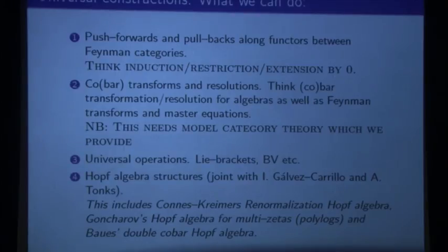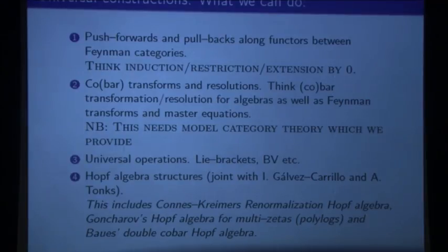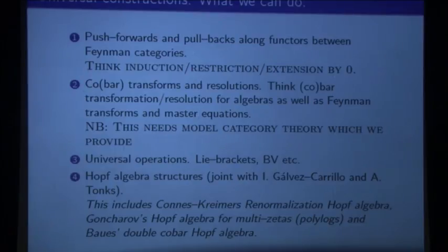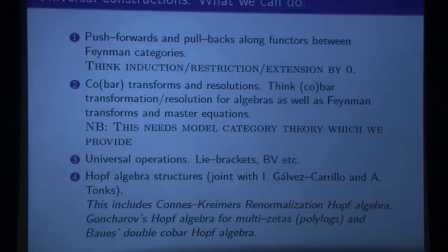Another thing you can do is cobar transforms and resolutions. We can do cobar transforms, bar transforms, resolutions, and Feynman transforms. This is rather hard because I used the word 'resolution': for an algebra you'd take a free resolution. But this is quite a general setup — I didn't say anything about linear or anything. So we need some model category structures to say what free resolutions or cofibrant objects are. We did that — it's in the paper; that's why it's 80 pages. And these Feynman transforms are related to what we wanted from the paper on master equations. In those master equations you have brackets and BV operators. There's a two-part question: one, where do these brackets and BV operators come from? And two, how do I get the master equations? For that I need Feynman transforms.